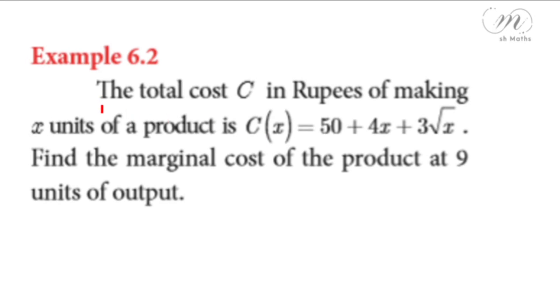Example 6.2: The total cost C in Rupees of making x units of a product is C(x) = 50 + 4x + 3√x. Find the marginal cost of the product at 9 units of output.